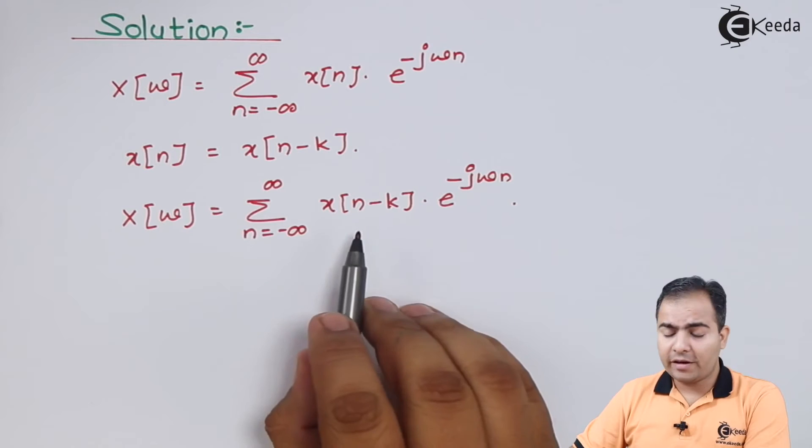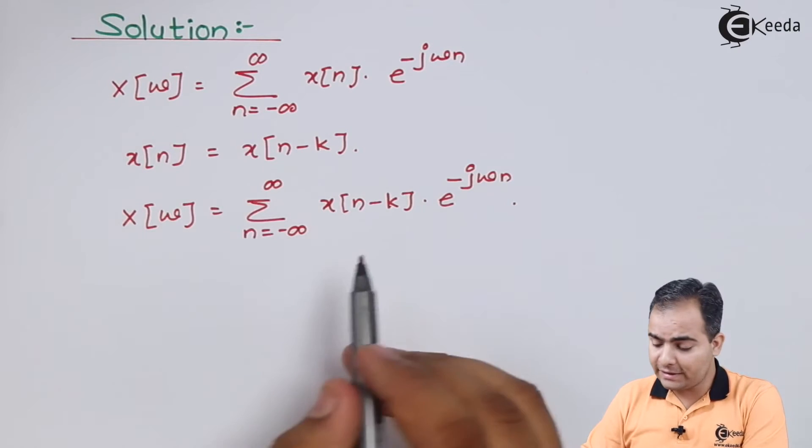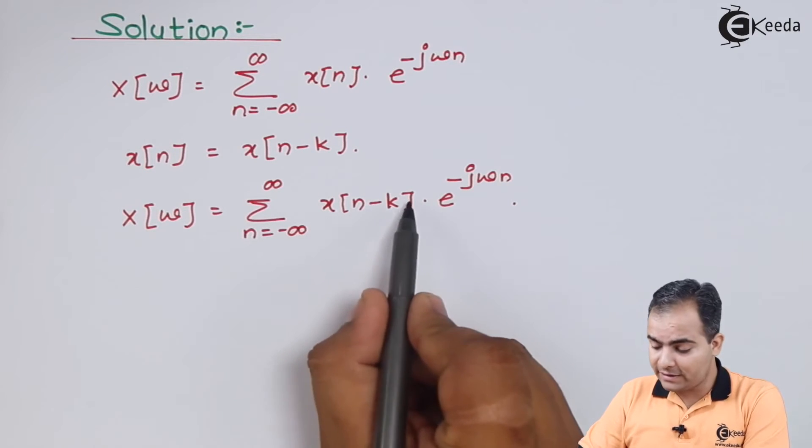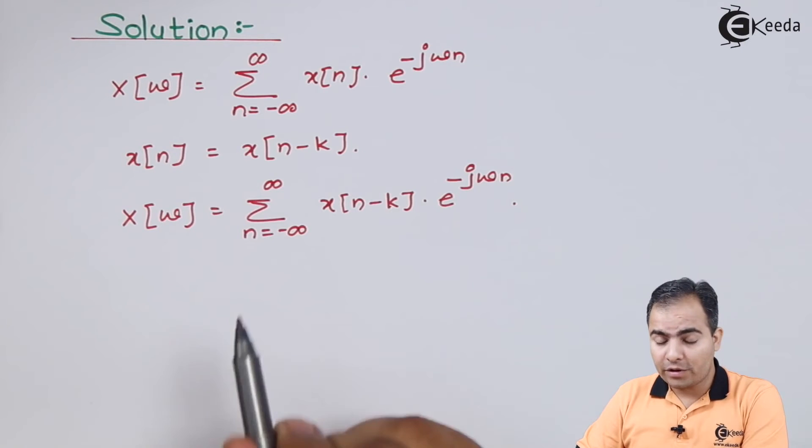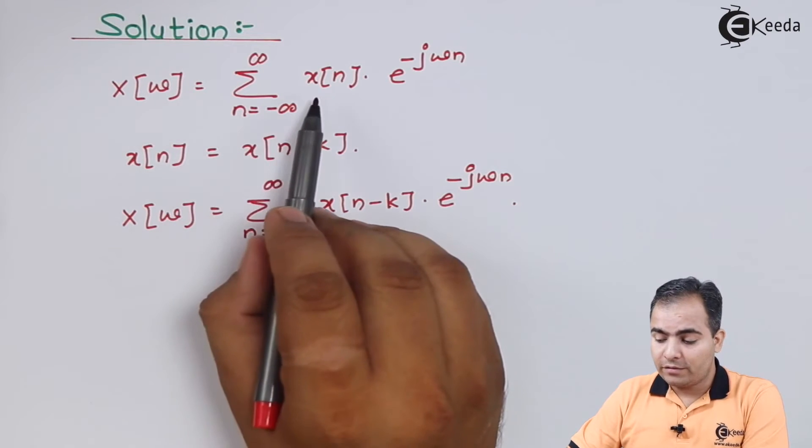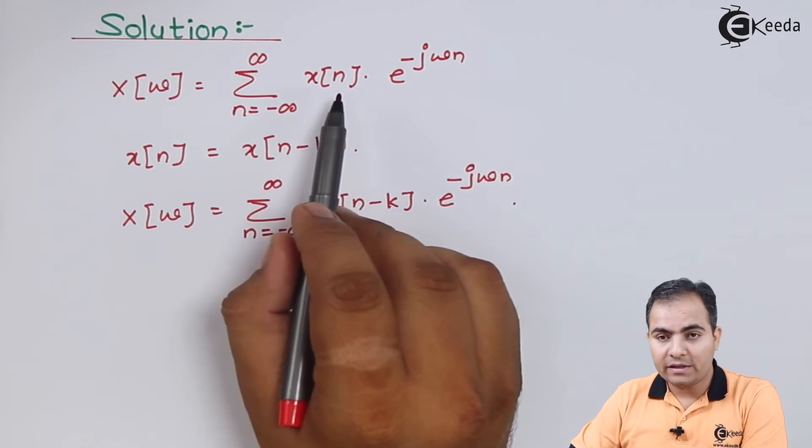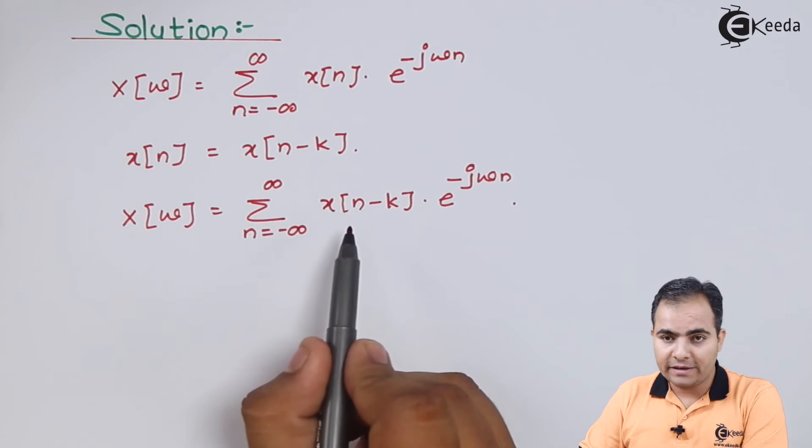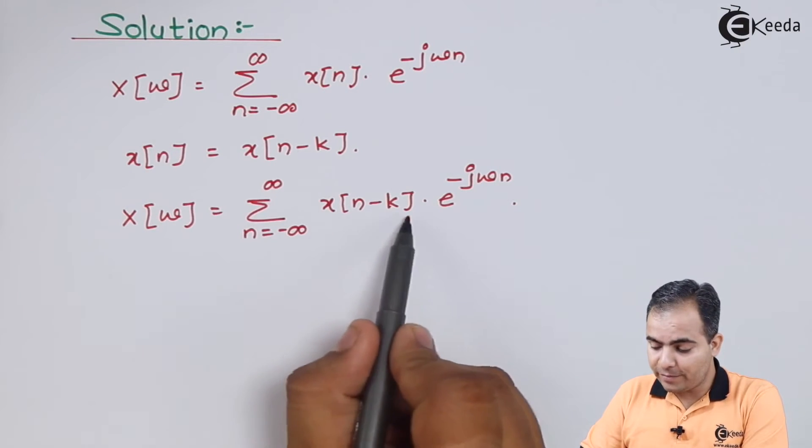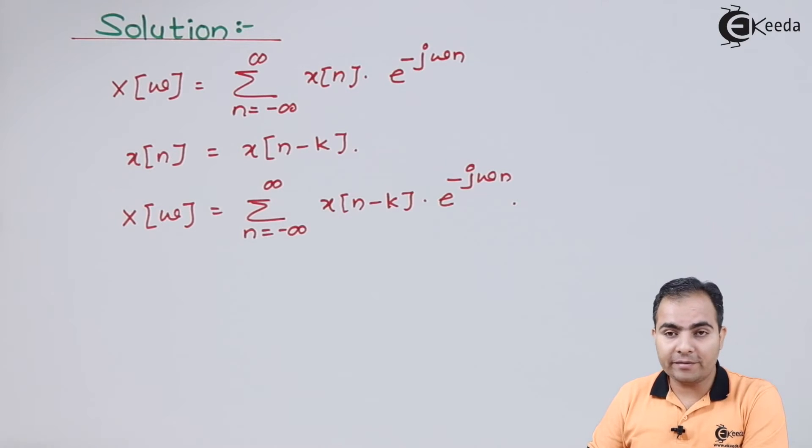Now we cannot directly apply the definition of DTFT. The reason is here the x[n] is delayed by k. What we want is only a simple variable. Here the variable is delayed, so I am going to replace this whole n-k by a different variable.